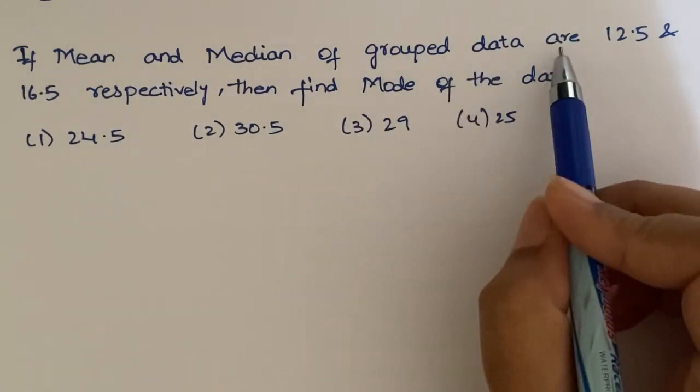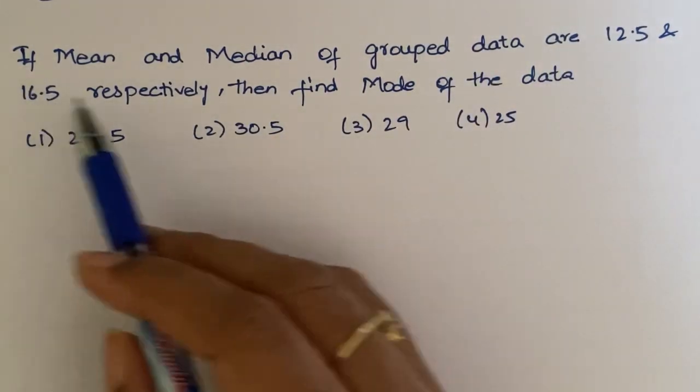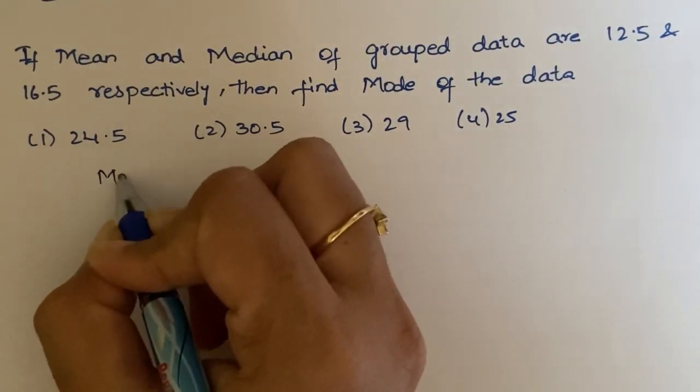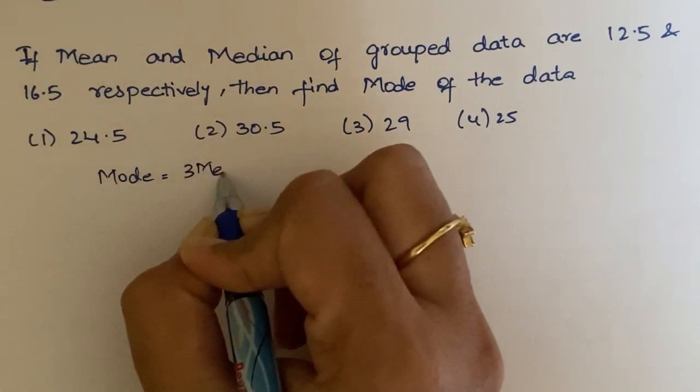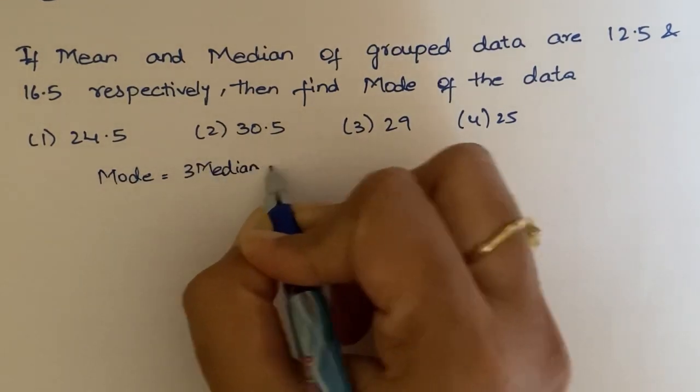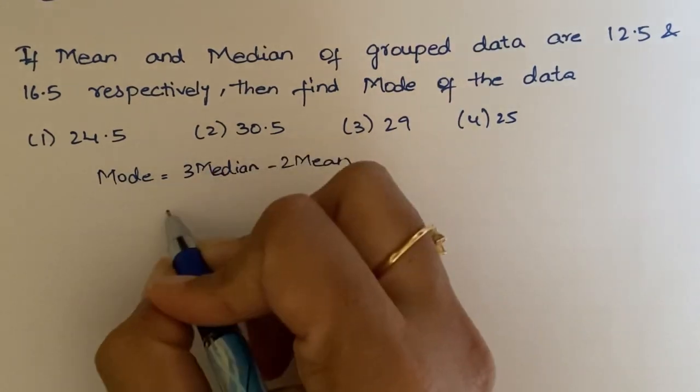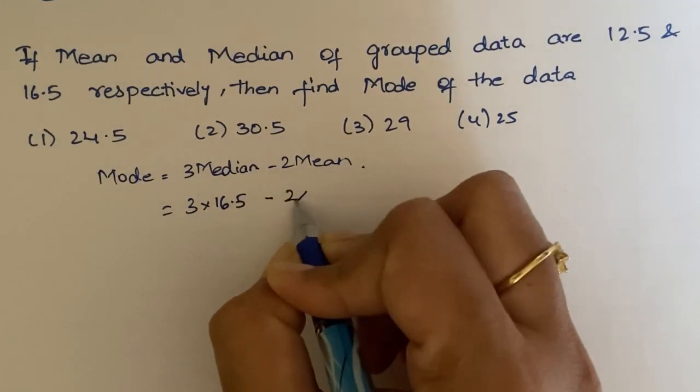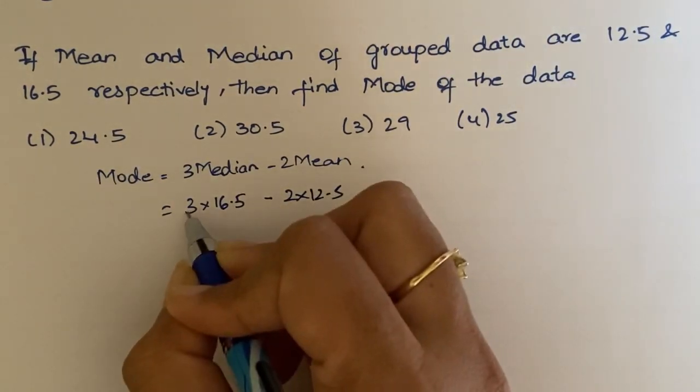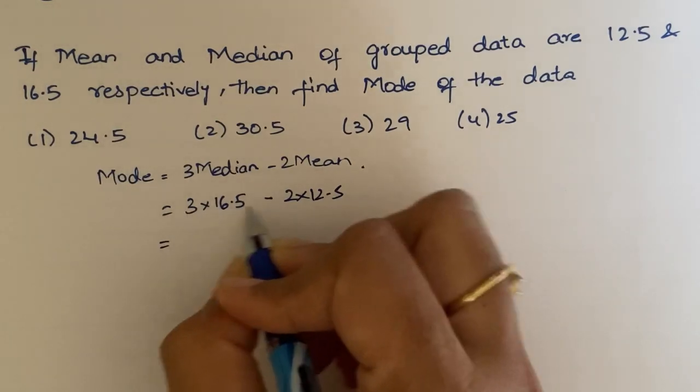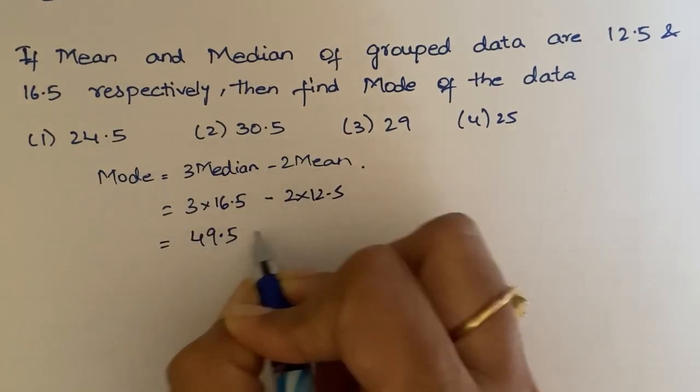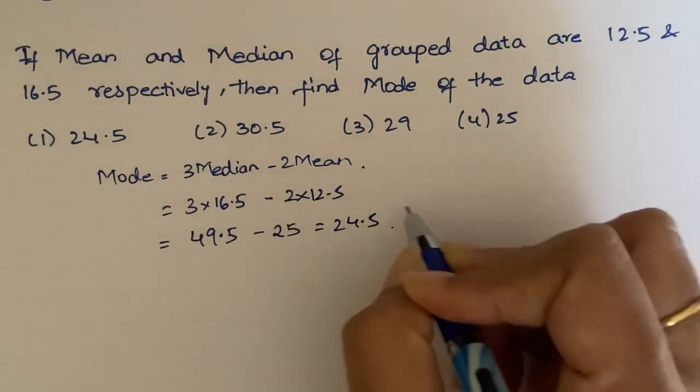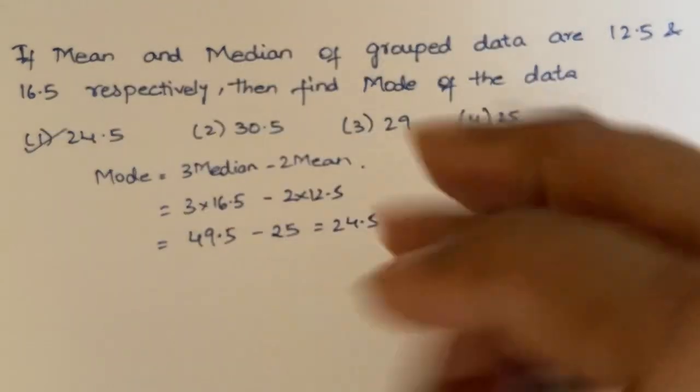Next. If mean and median of grouped data are 12.5 and 16.5 respectively, then find mode of the data. I am going to use a formula. Mode is equal to 3 times median minus 2 times mean. So, here median is 16.5 minus 2 times mean, mean is 12.5. This is 49.5, 12.5 into 2 is 25. Difference is 24.5. So, the mode of this grouped data will be 24.5, first option.